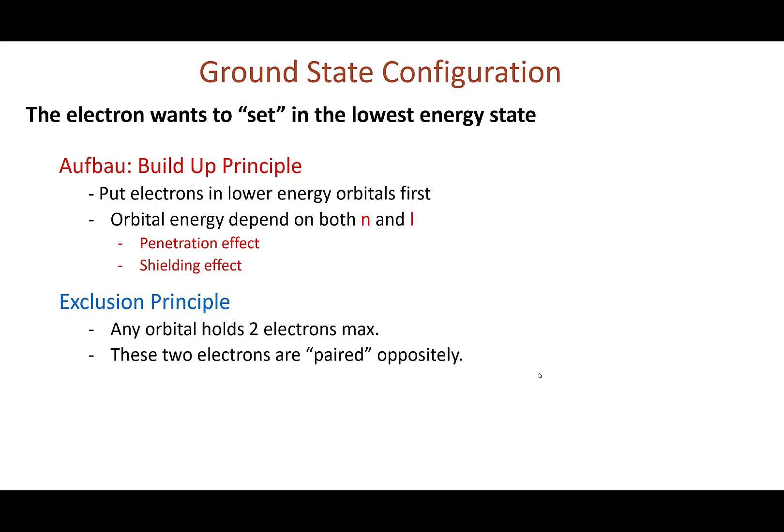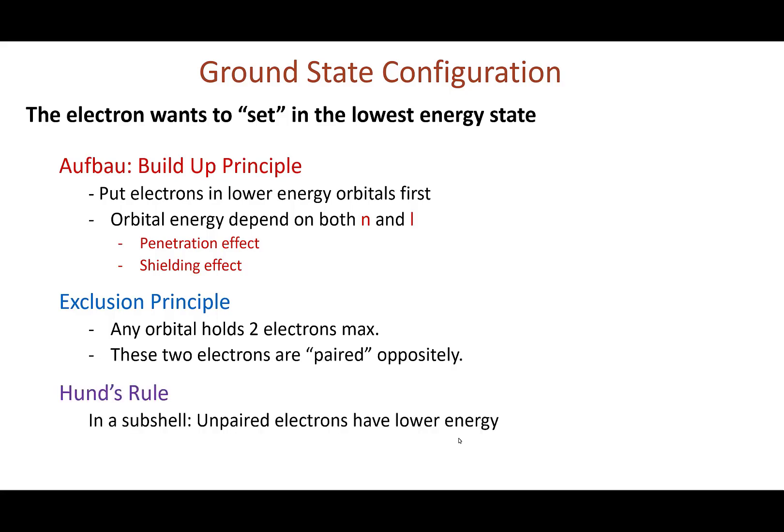Then we have the Pauli exclusion principle, which says that any orbital can hold a maximum of two electrons. These two electrons must be paired in opposite spin directions. Finally, we have Hund's rule, which says that in a subshell, if you have more than one orbital available, electrons prefer to be unpaired, because when they are unpaired they will have lower energy. The whole point of all three principles is that electrons go to lower energy orbitals first.